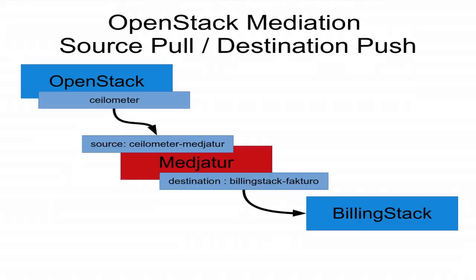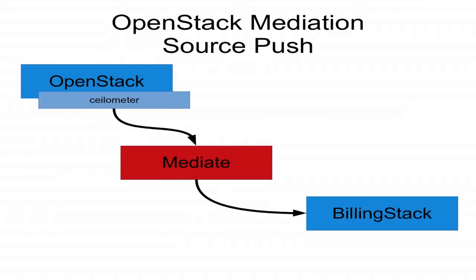One idea is that instead of having a mediation process which pulls data and pushes it into the billing system, you have Ceilometer pushing the data for you when it's collecting it. So Ceilometer goes out to an OpenStack service, gets the compute hours used, and pushes it straight into the billing system. This gives you almost live billing — or live stats for billing — which is pretty cool, similar to what Amazon just started doing a few months back.